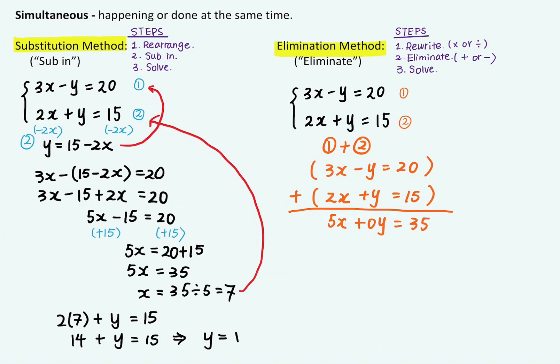Now my equation becomes 5x plus 0y, which is 0, is equal to 35. And I can directly solve for x by dividing 5 on both sides. So x is equal to 35 divided by 5, which is 7.